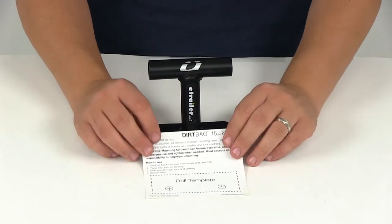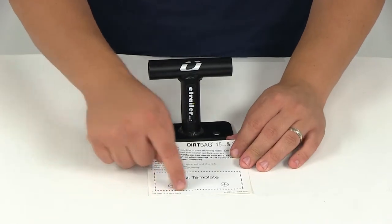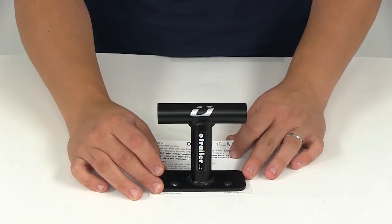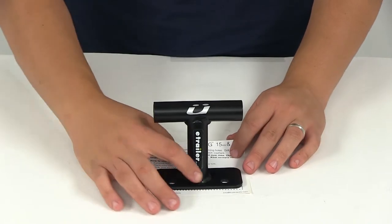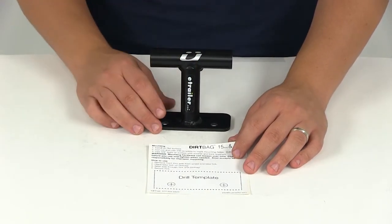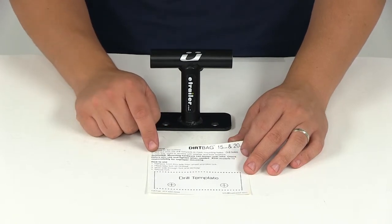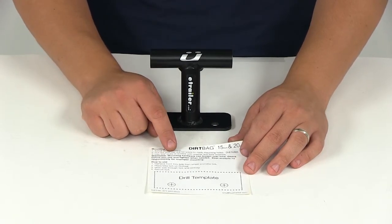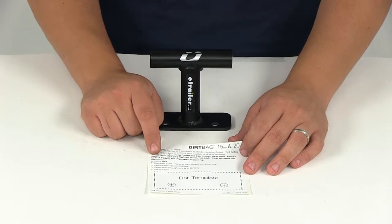You'll also get a drilling template included with a real-size illustration, so you can mark the correct drill holes to mount this correctly. No hardware is included, but it recommends using 3/8 inch bolts or screws with washers and lock washers.